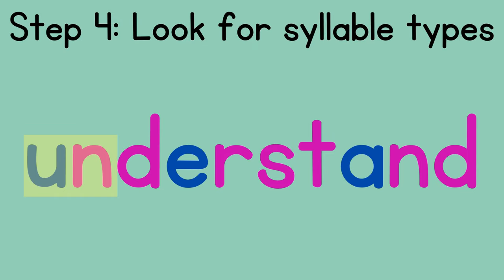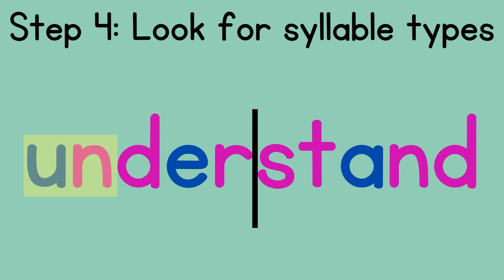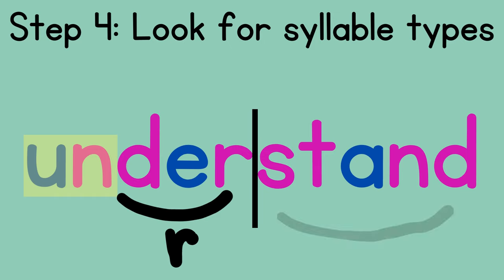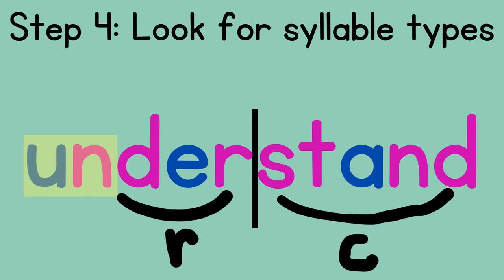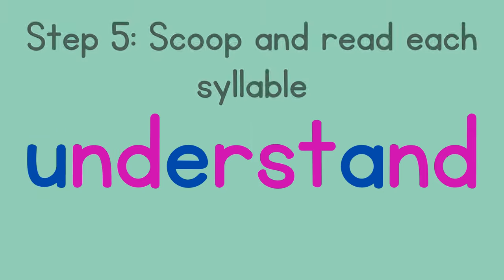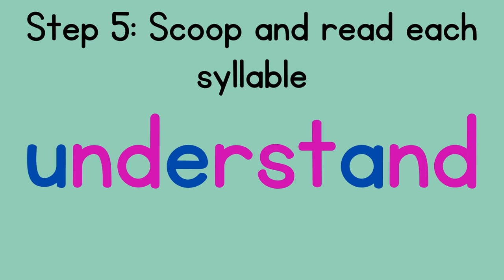Step four is to look for syllable types. To find the syllable types, we need to divide the syllables. We find the consonants between vowels and divide after the first consonant — so between the R and the S. That makes 'dir' the syllable, which is R-controlled. The 'stand' syllable is closed because the A is closed in by other letters. Step five is to scoop and read each syllable.